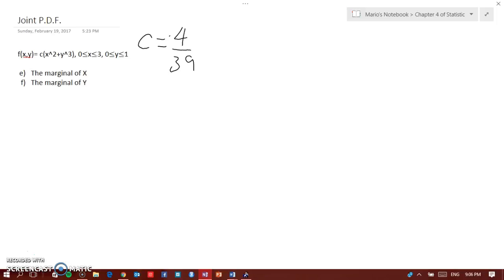So how do you get the marginal PDF of X? It's simple. All you have to do is integrate with respect to y. Basically we would get 4 over 39, which is C, times the integral from 0—I'm not going to vary it—x squared plus y cubed.